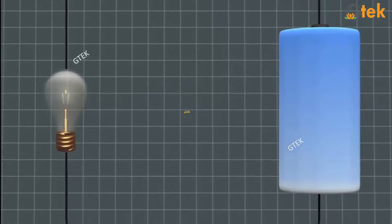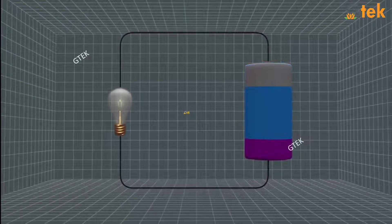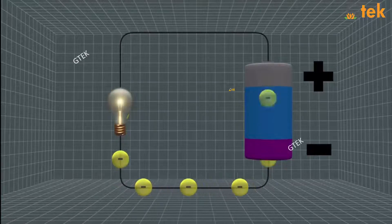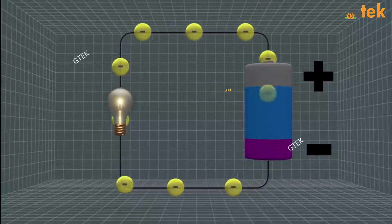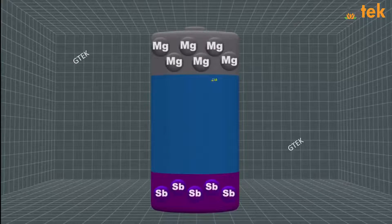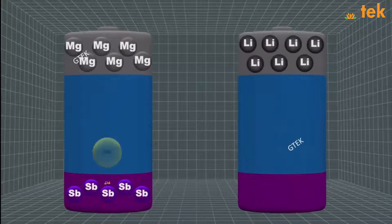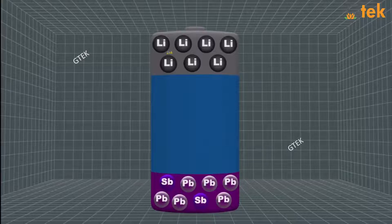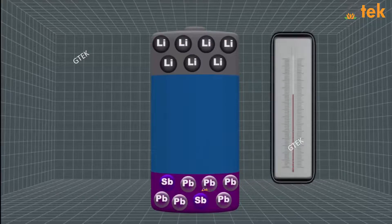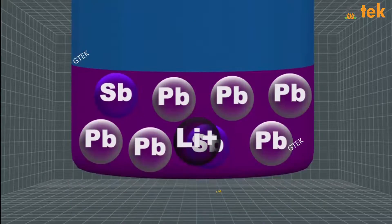Let us see how the molten metal battery works. It has a reaction which goes on. On both terminals we have, on one side Mg (magnesium) and Sb (antimony), and on the other side Li (lithium) with a combination of antimony and lead. This is how the molten metal battery reacts.